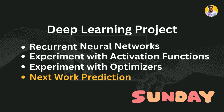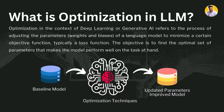Now, what is optimization in large language modeling? Optimization, in the context of deep learning or generative AI, refers to the process of adjusting the parameters or weights of a large language model to minimize a certain objective function — typically a loss function. When your model predicts some output and that output is far from the actual output, that is calculated by the loss function, and you need to make that loss value as small as possible. That's where optimization techniques come in.